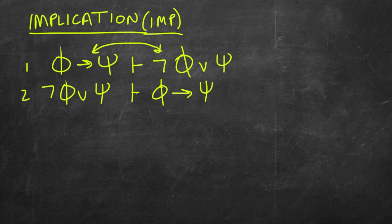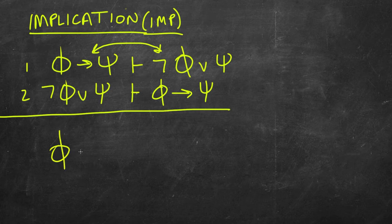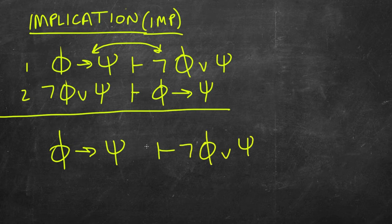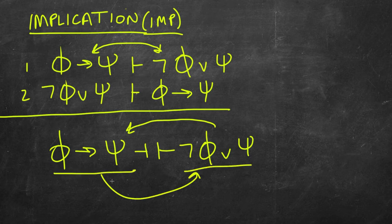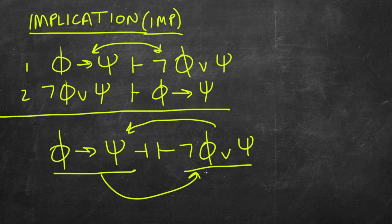Because of this, we can simplify our presentation: if we have a conditional — if phi then psi — we can reason to the disjunction not phi or psi, and we can also reason the other direction using a single turnstile. What this is saying is that you can reason either way. These two formulas are what's sometimes called a rule of replacement or equivalence rule — the two formulas are interderivable.